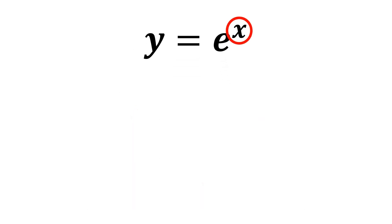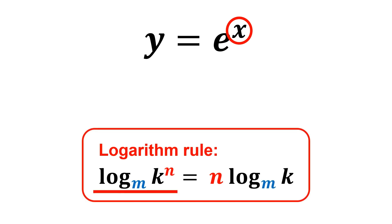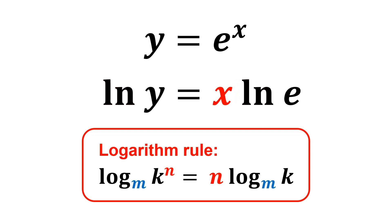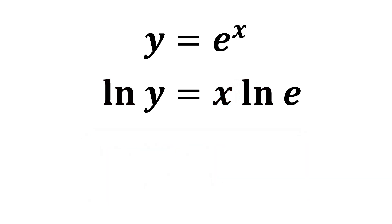Notice that we have a variable x in the exponent. According to the logarithm rule, where we have log base m of k raised to the power of n as an example, we can bring the exponent down, and we end up with n multiplied by the log. Therefore, in this case, we can take the natural log on both sides of the equation so that we can bring the x down, and we will be getting ln y equal to x multiplied by ln e.